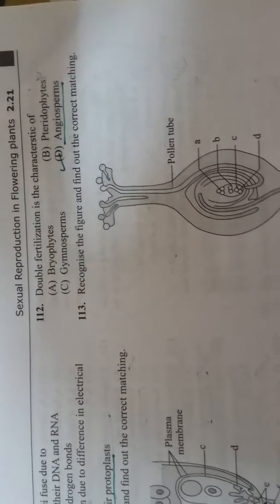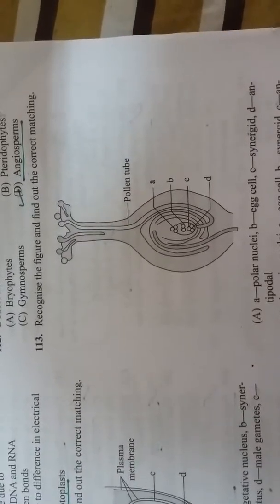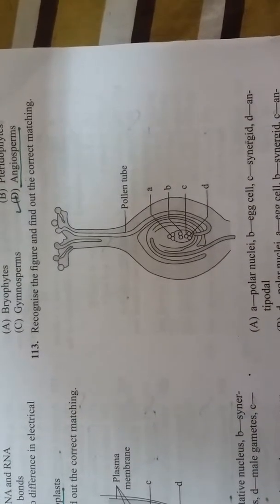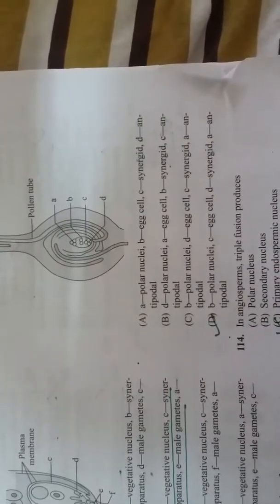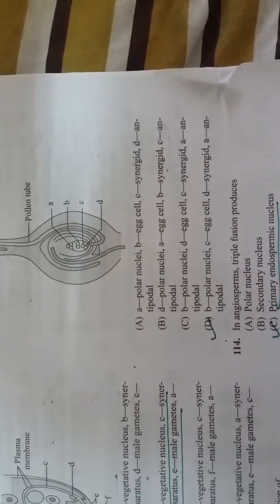Recognize the figure and find out the correct matching. Pollen tube, B is polar nuclei, C is egg cell, D is synergid, and A is antipodal.